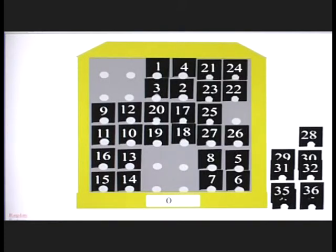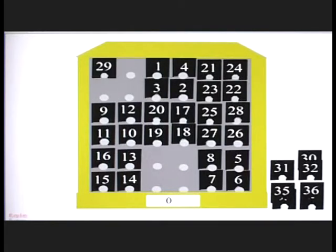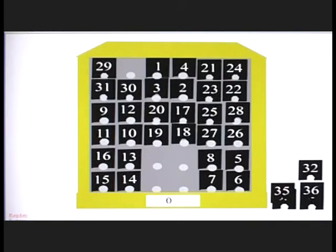And when this is finished, every single row, column, and major diagonal will add up to 111.